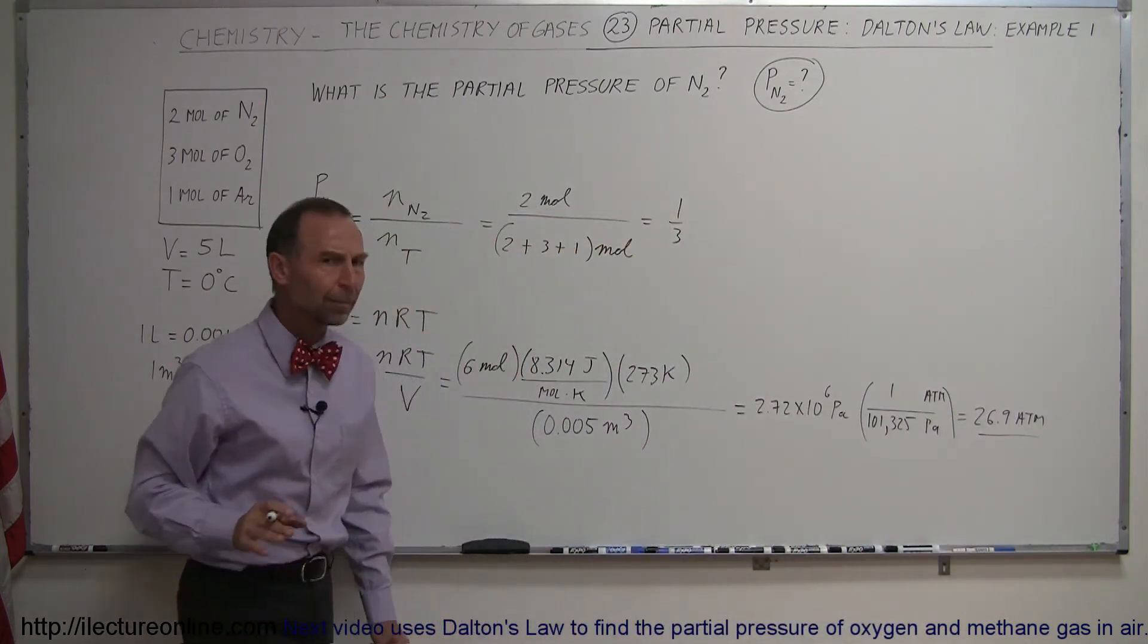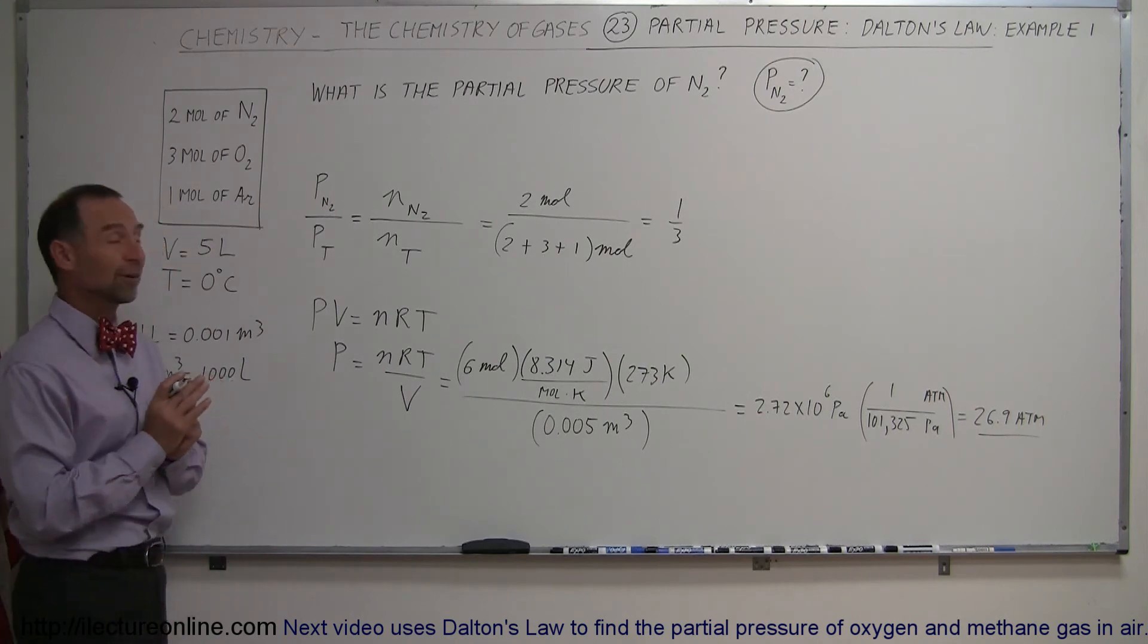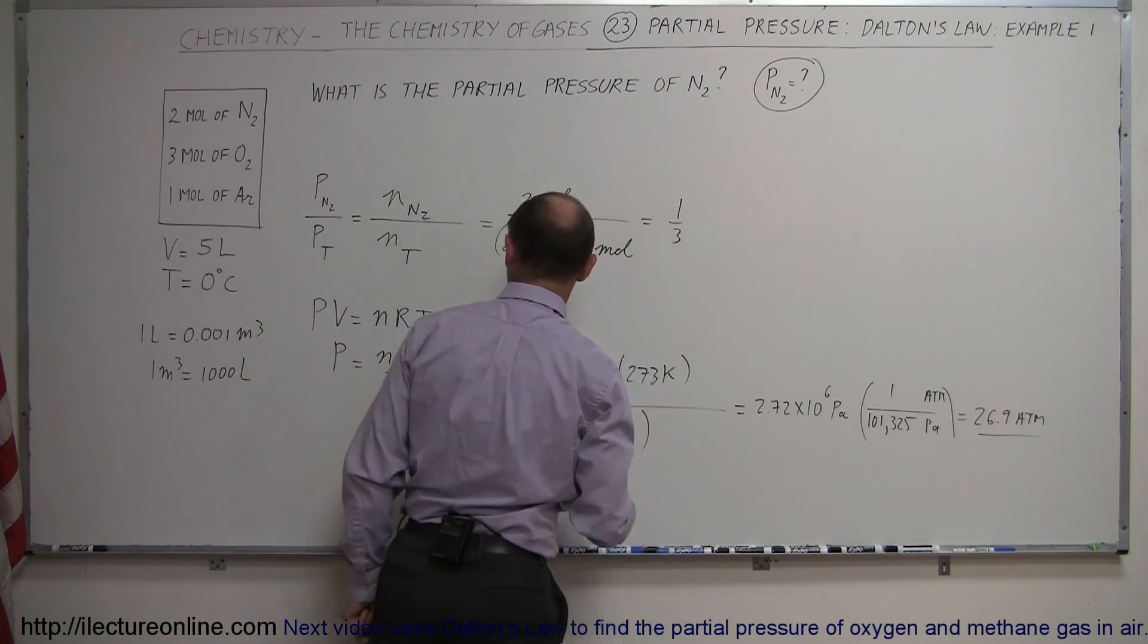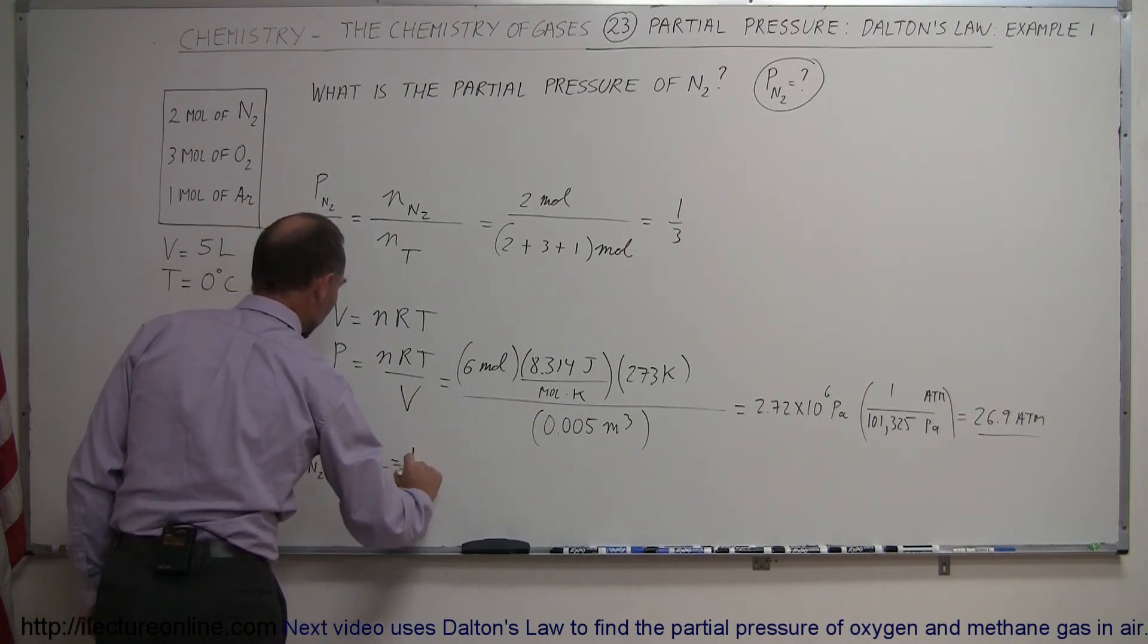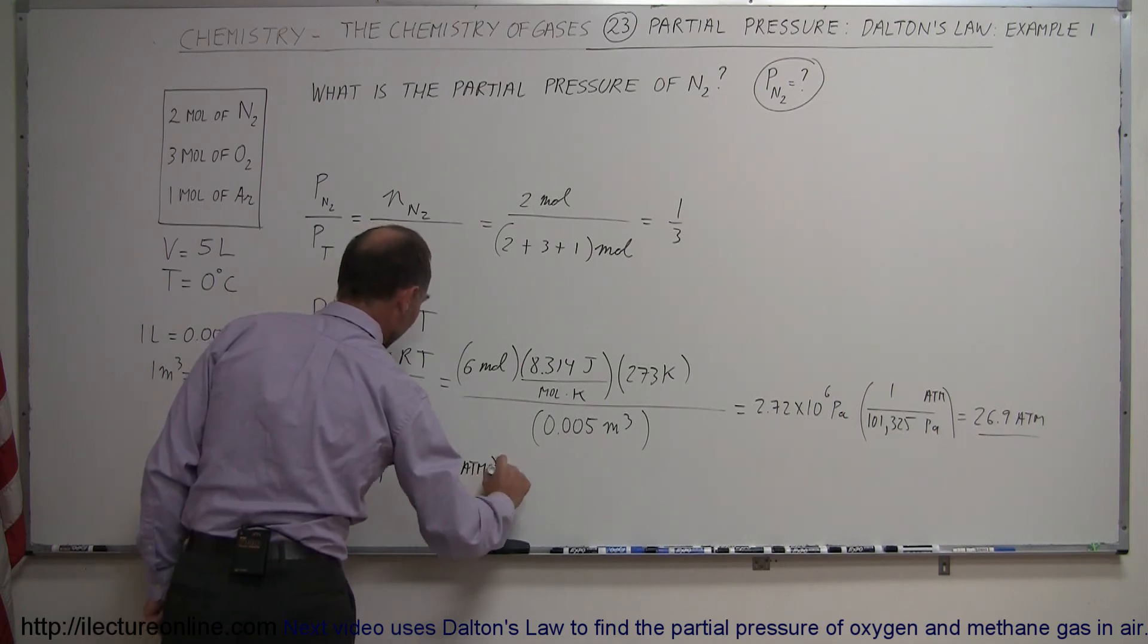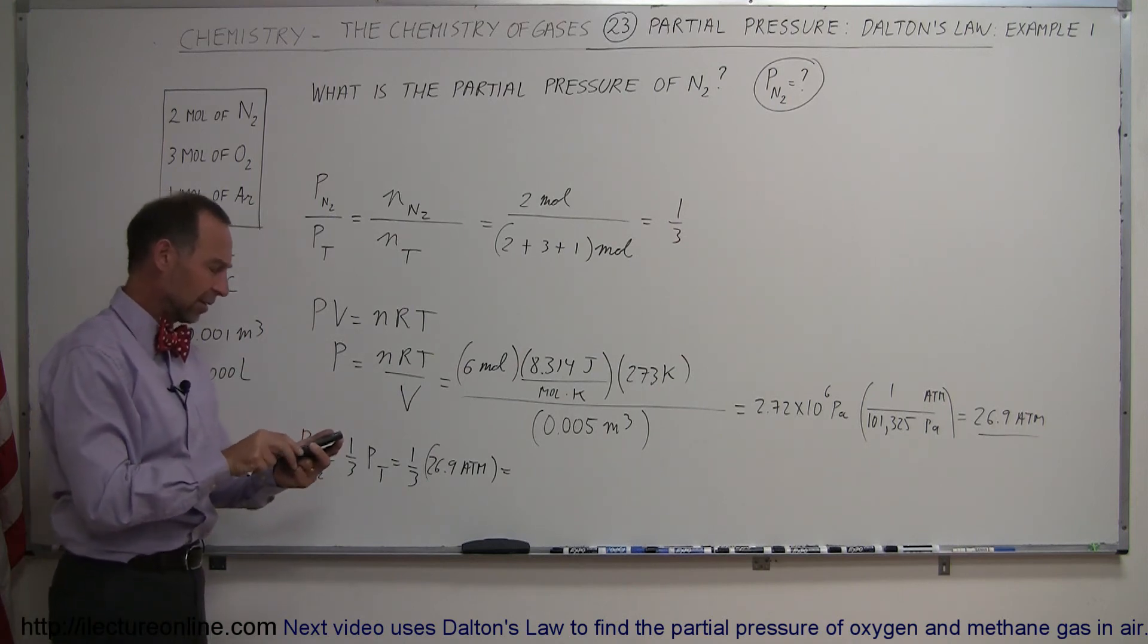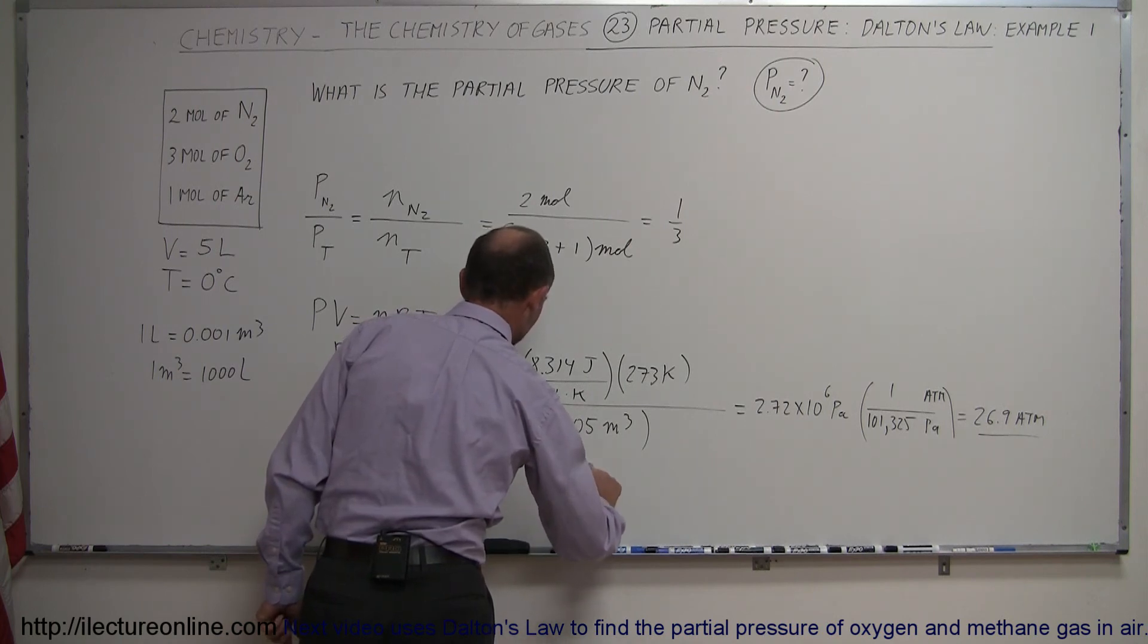All right, better be a strong container, that's a lot of pressure right there. So now we want to figure out the partial pressure of nitrogen compared to the total pressure. So this would be one-third the total. So we can say that the pressure for the nitrogen gas is equal to one-third the total pressure, which is one-third times 26.9 atmospheres, so we divide this by 3, and we get 8.96, 8.96 atmospheres.